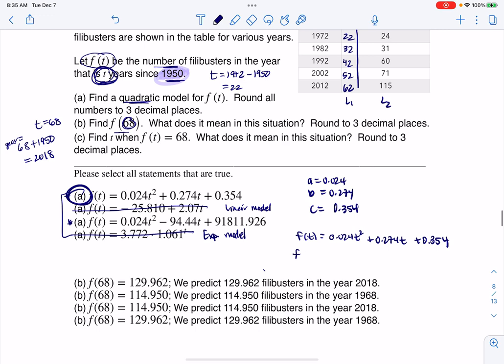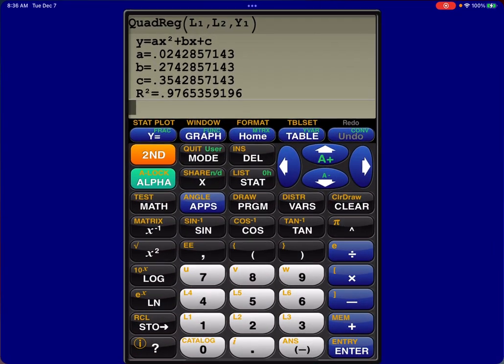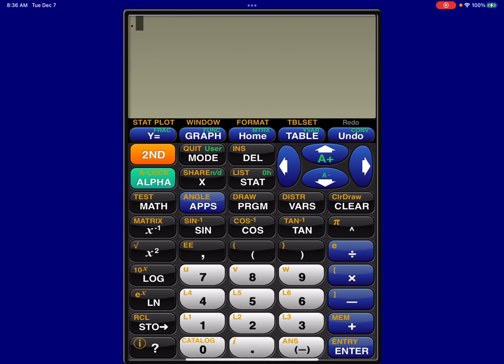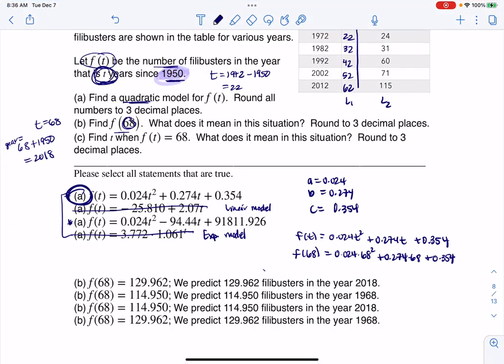Let's go ahead and do F(68). It's going to be 0.024 times 68² plus 0.274 times 68 plus 0.354. Now I could crunch this number on my calculator. This was 0.024 times 68², and then we would add to it 0.274 times 68, and then we would add to that 0.354. I get about 129.962 filibusters.